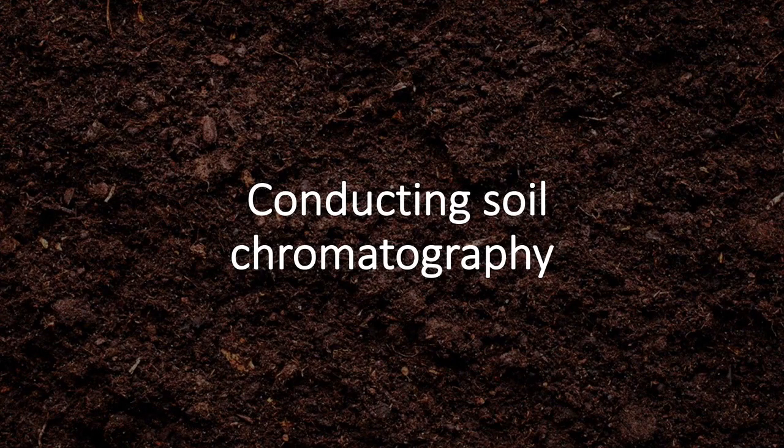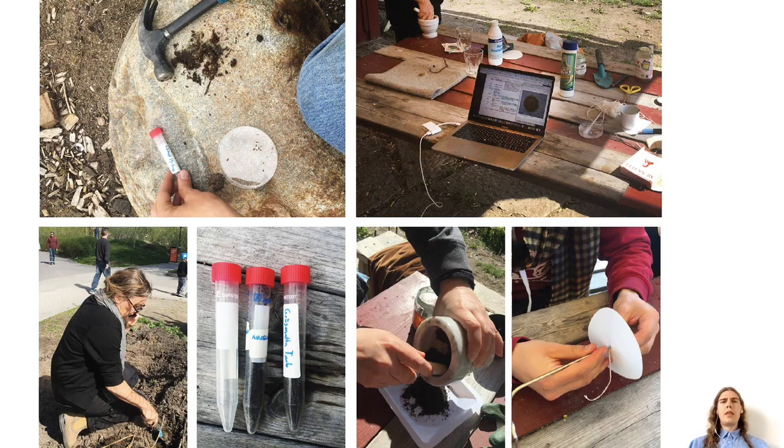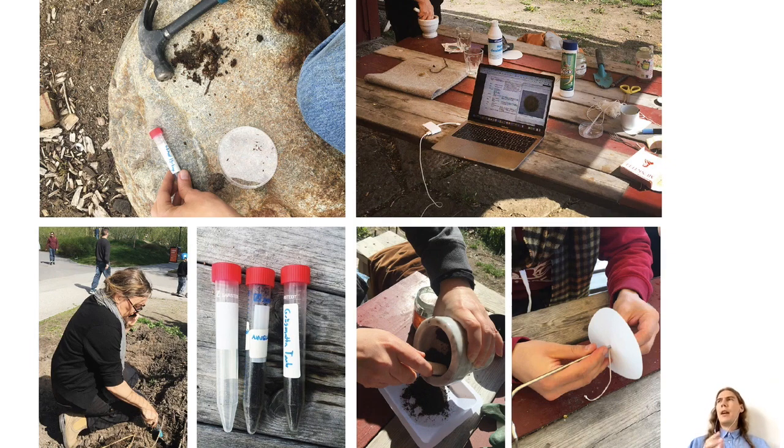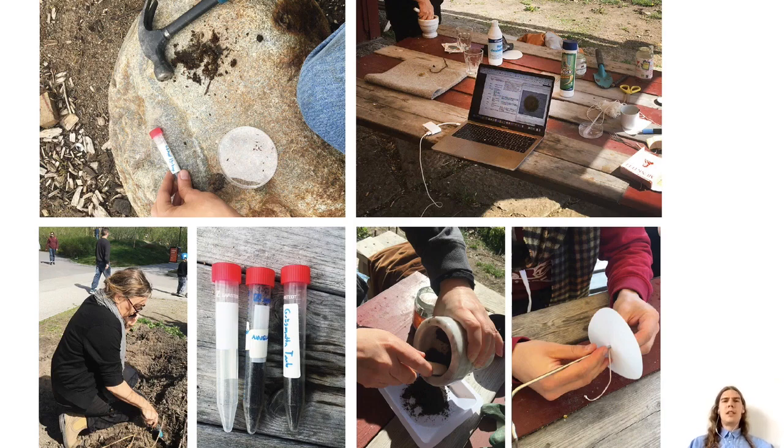So what are the steps of conducting soil chromatography? The first step is to gather the soil samples, and here the urban farmers gathered samples from diverse places, including those that they expected to be particularly fertile, but also those that they expected to be maybe polluted or deficient in nutrition.